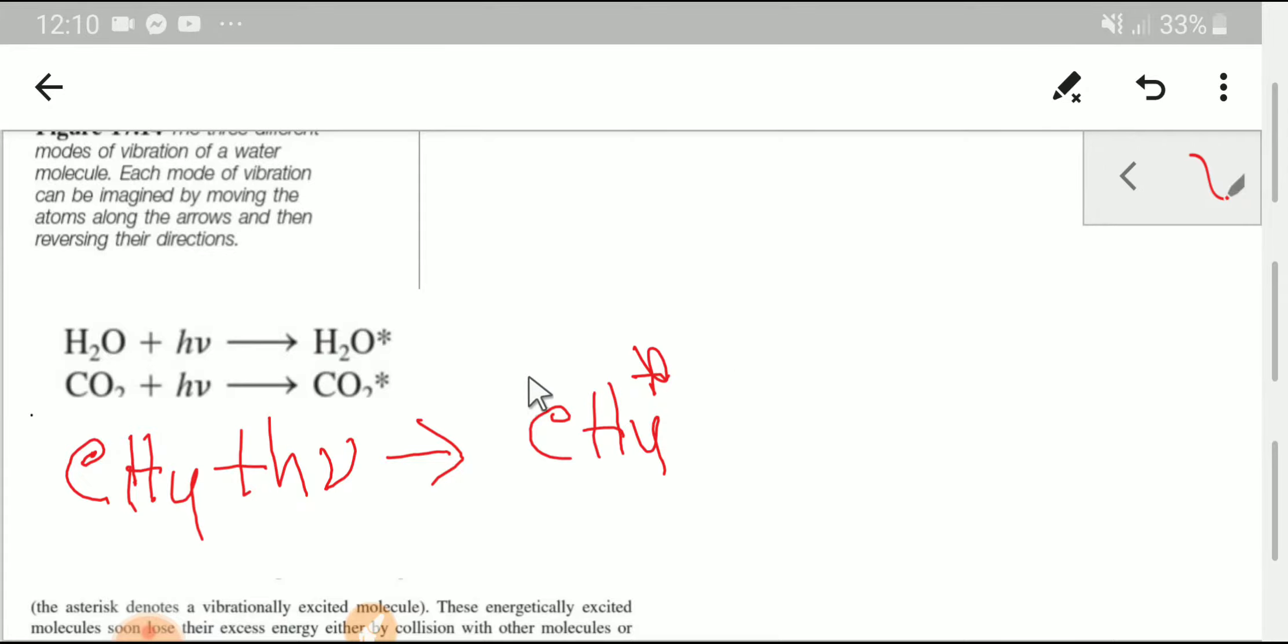Methane will absorb the IR radiation and it will come from lower vibrational level to higher vibrational level. You know that in higher vibrational level, methane molecule is unstable, so it will try to come back to its lower vibrational level by releasing energy. The released energy is responsible for global warming or greenhouse effect.